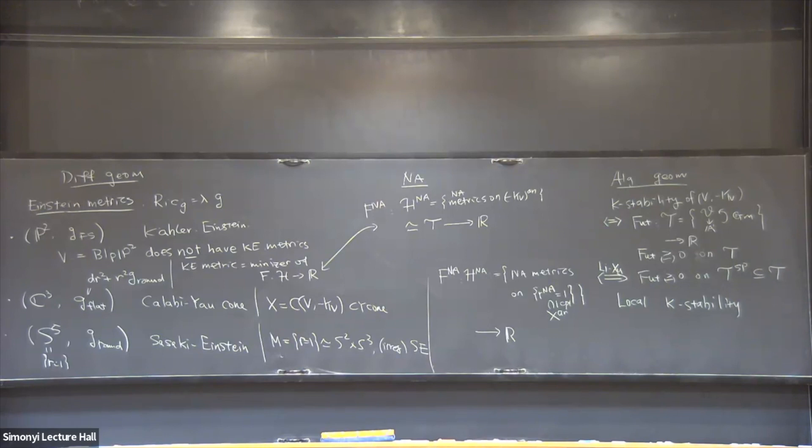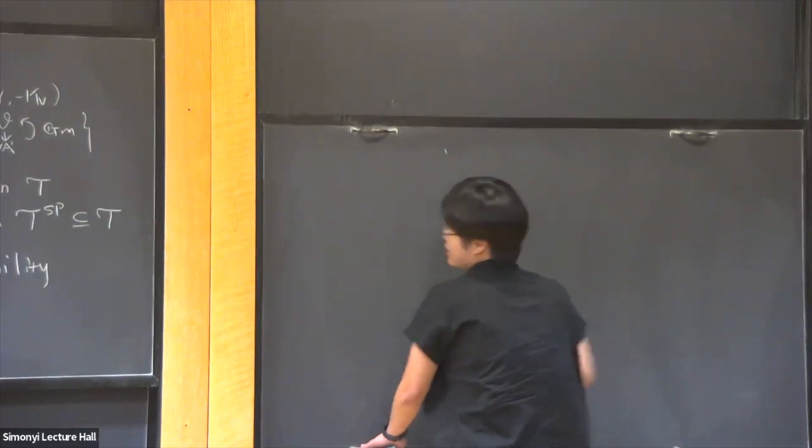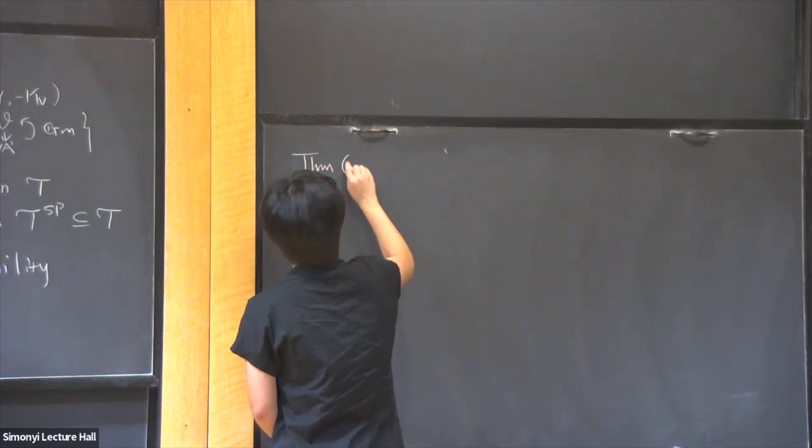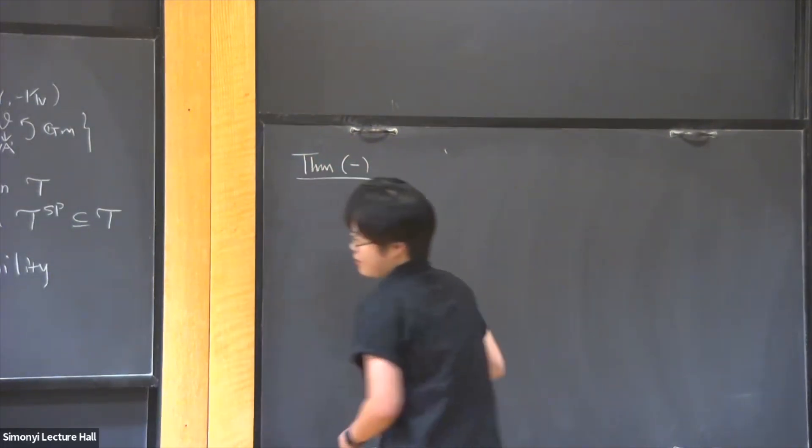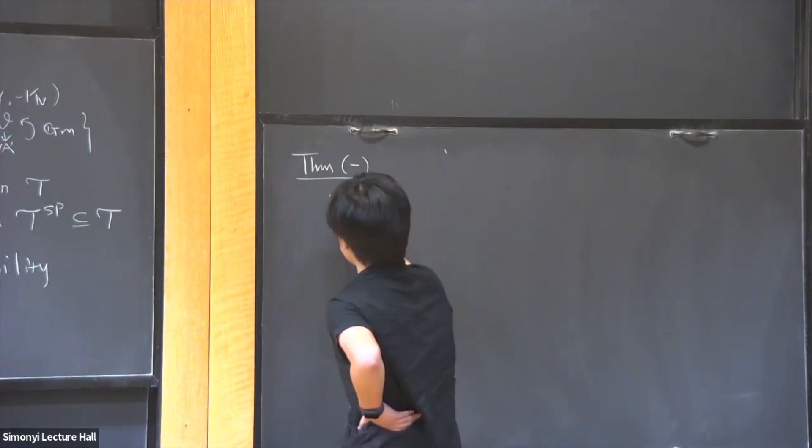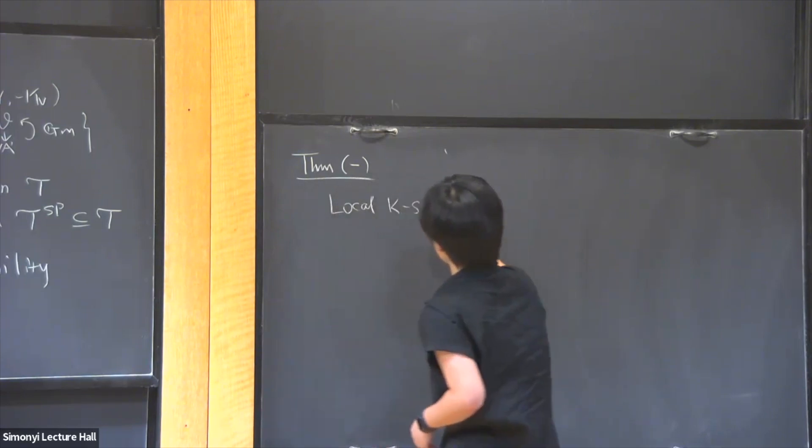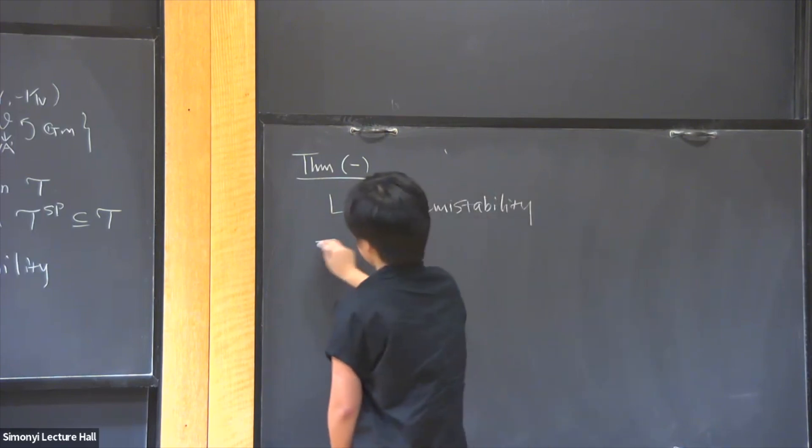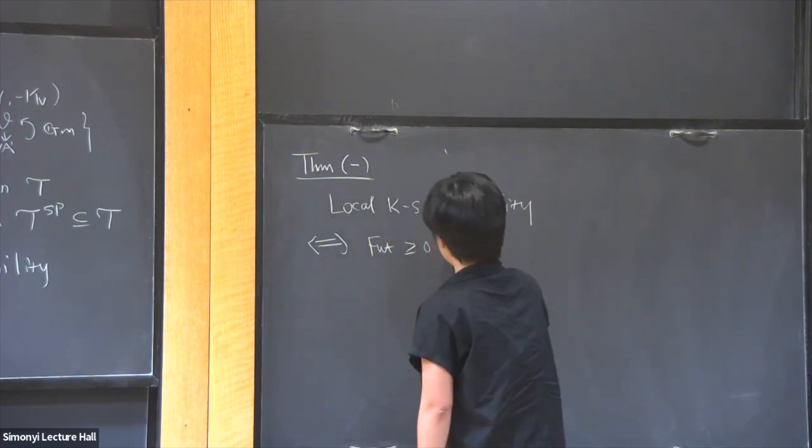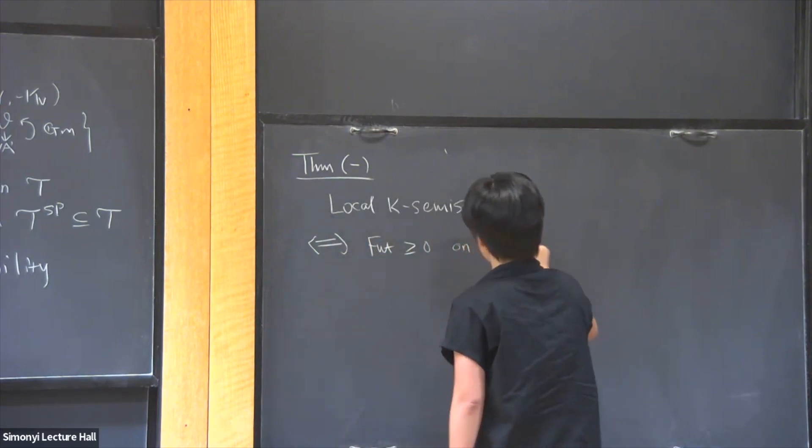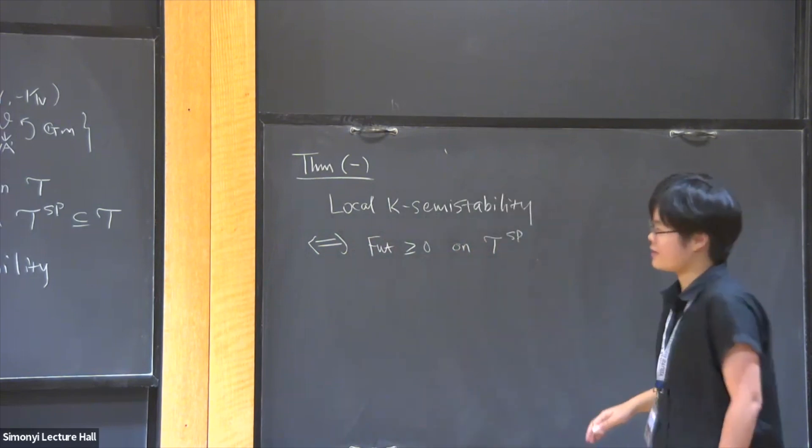And I think I'll end with a theorem, which is analog of the Li-Xu theorem in the global case, but was previously not known and does not use the minimum model program. So the theorem is that to test local K-semi-stability, it's equivalent to test those special test configurations. So it's the same as Futaki invariant being non-negative on special test configurations. All right, I guess I'll stop here. Thanks.